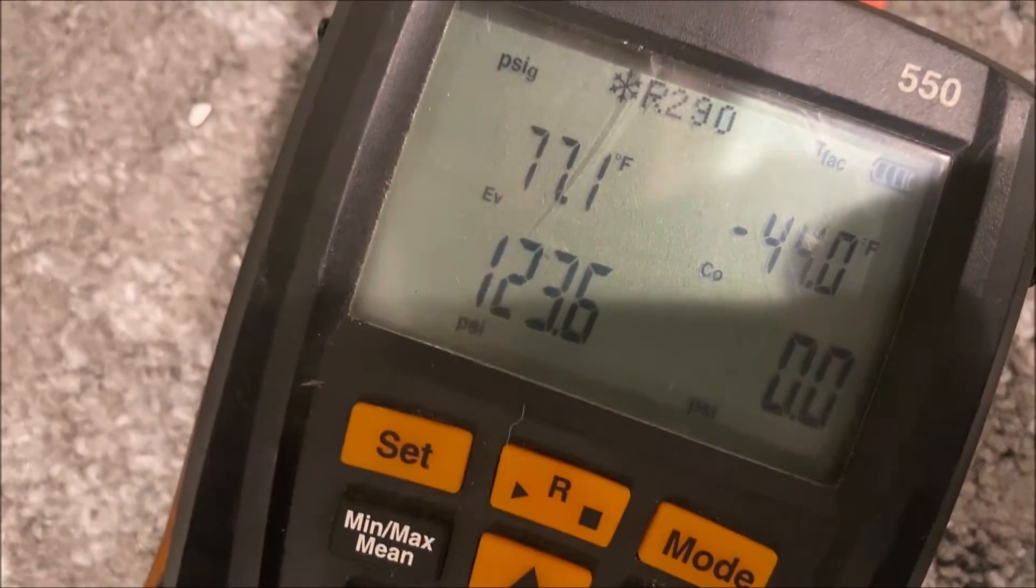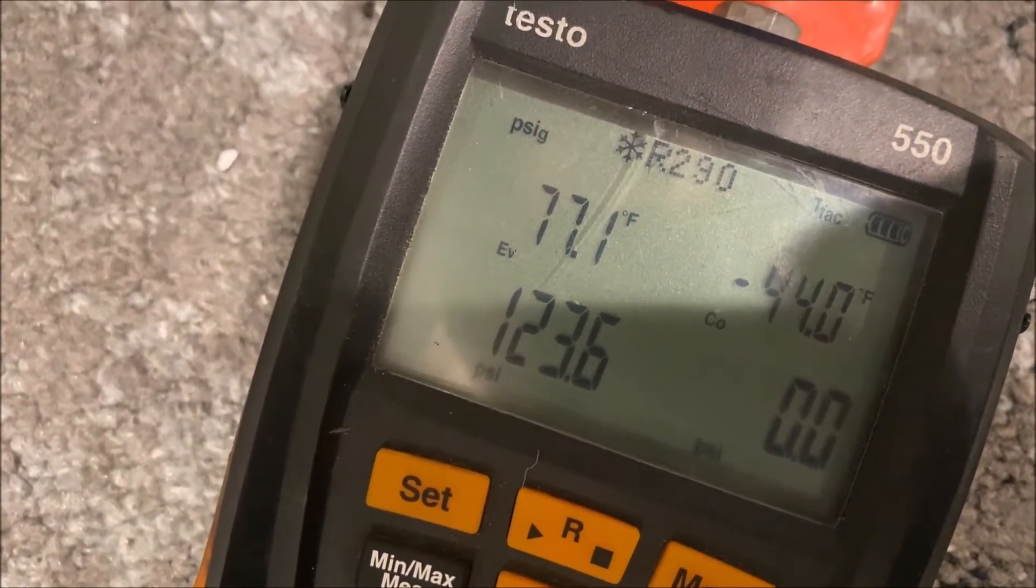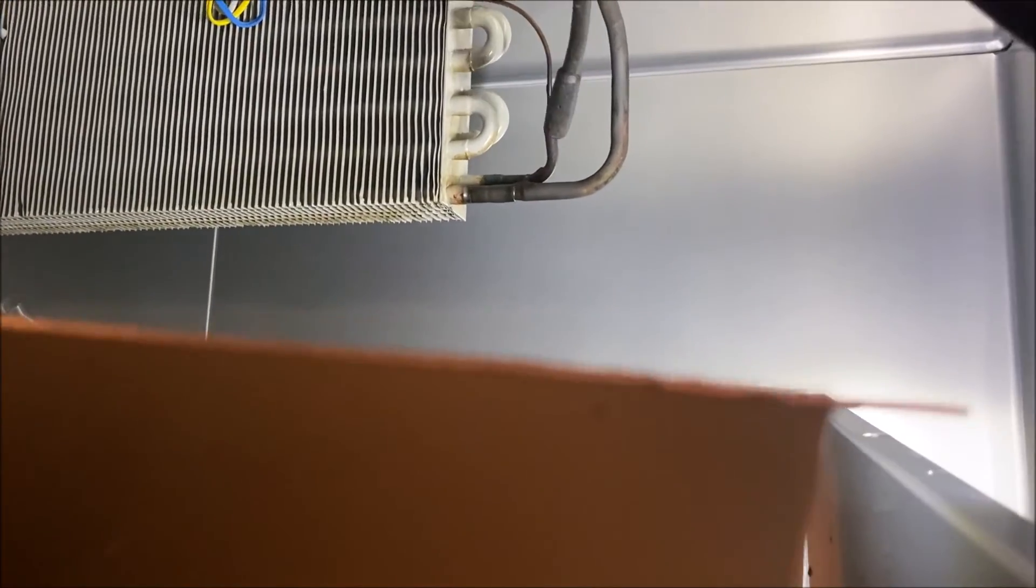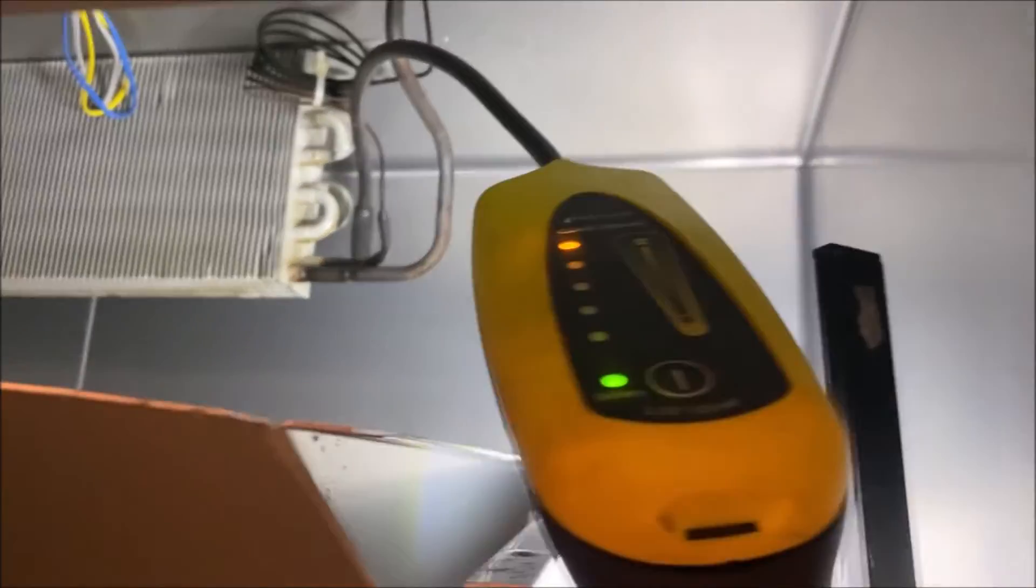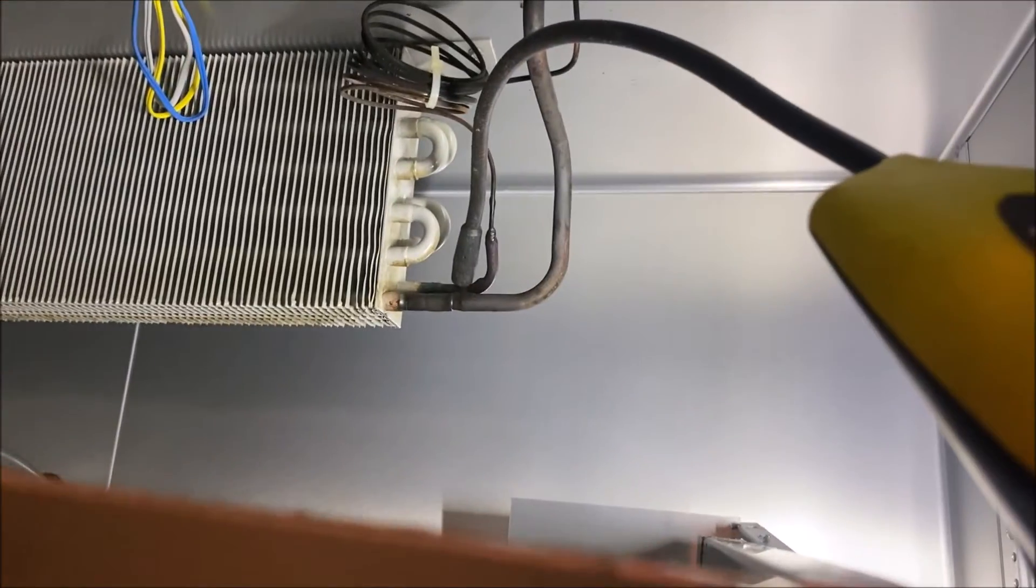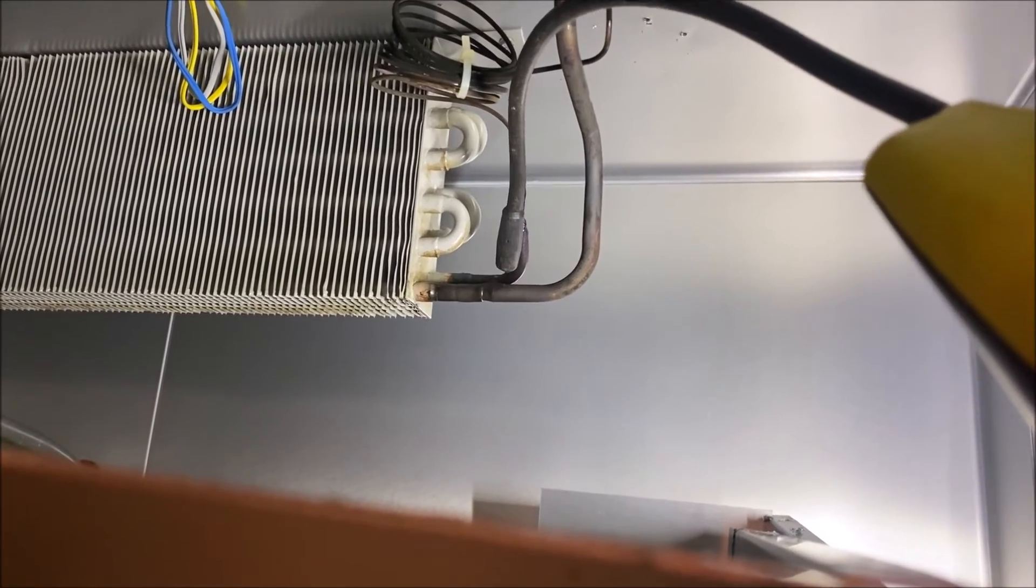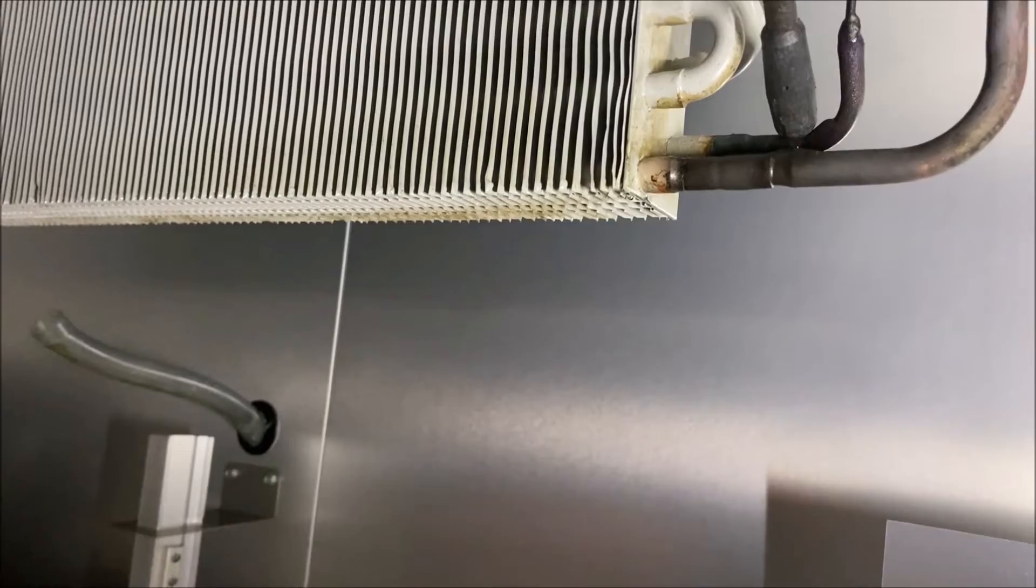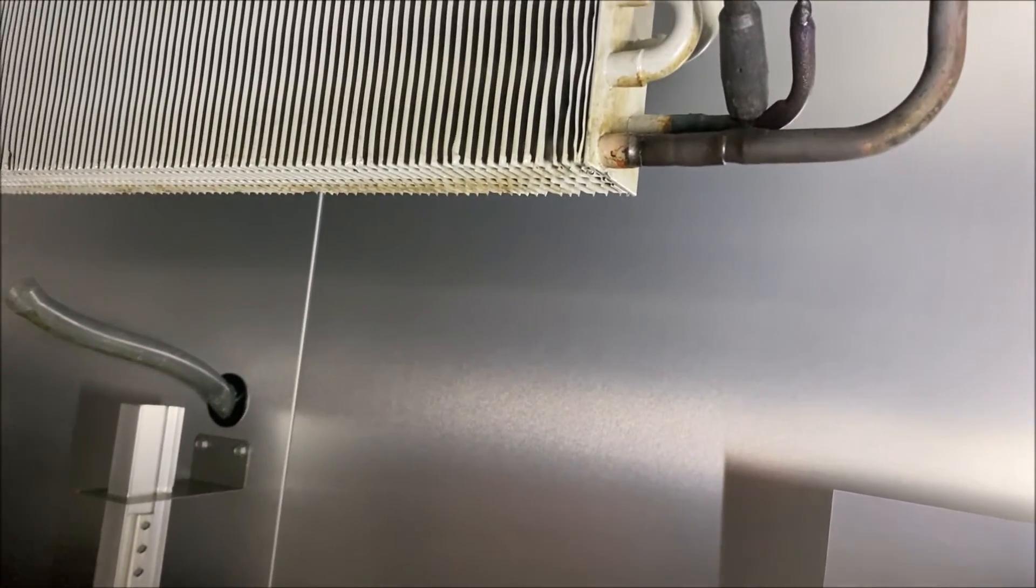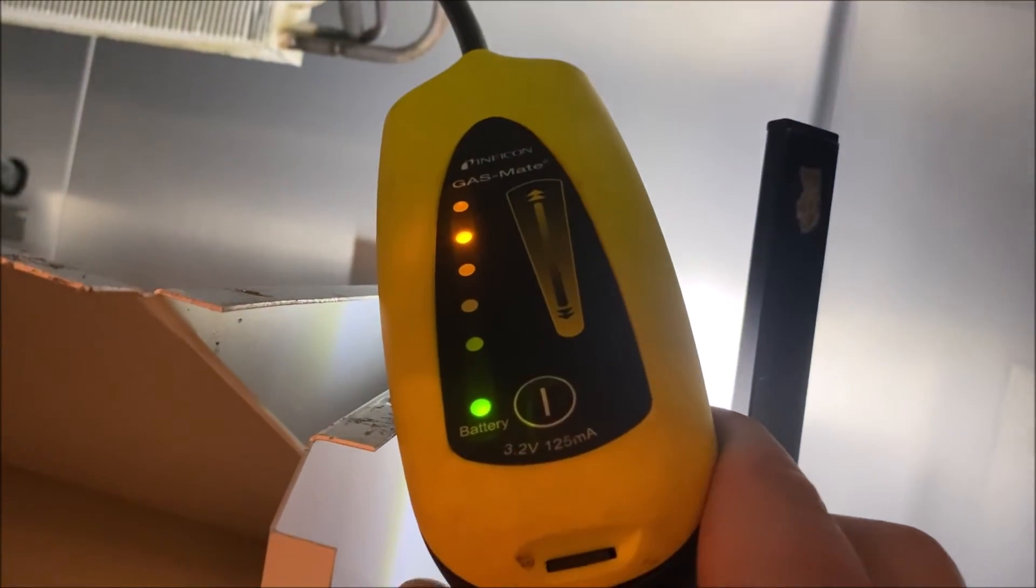We're gonna go ahead and dump some nitrogen in. I have 123.6 pounds of pressure. We know we have refrigerant in the system because when we started the system there was refrigerant in there. And bang, there we go, there is our leak. It's on that cap tube area somewhere here. We want to know the exact area where this is because this thing is a tiny leak and we've pinpointed the leak right there.